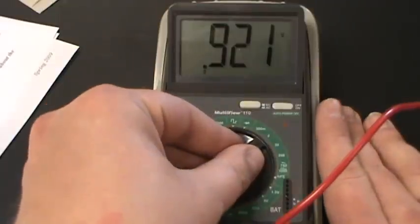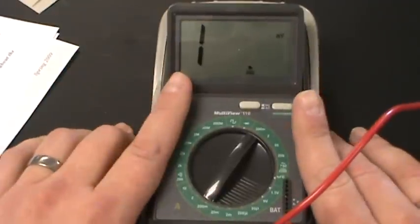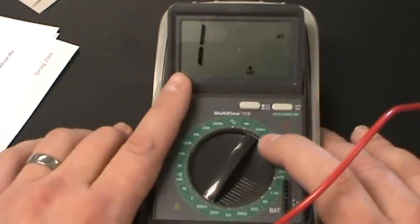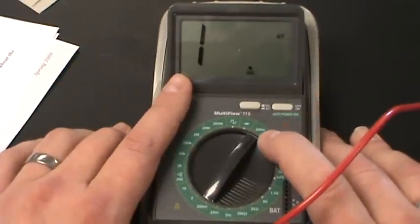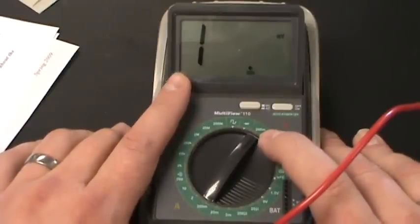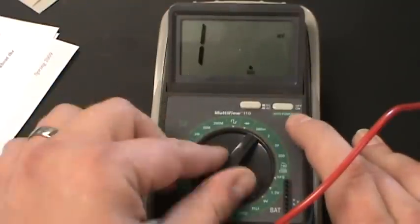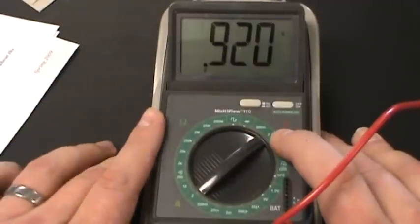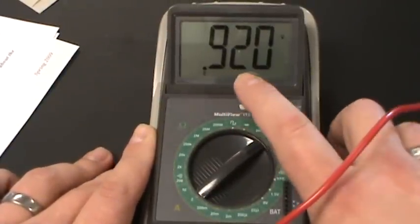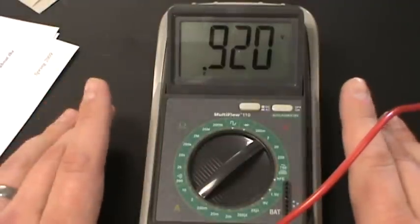Now just to show you what can happen in some of these, let's switch it down to the 200M. That's what's gonna happen, because 200M can measure up to 200 millivolts, but we've got more than 200 millivolts so essentially we've overloaded the meter. So let's back that off to the 2 and we're back to our 0.920 volt reading.